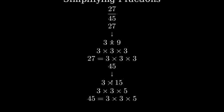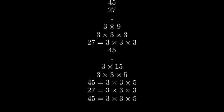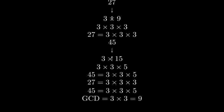we can find the greatest common divisor. Looking at both numbers, we can see that they share two 3's in common. So, the greatest common divisor is 3 times 3, which equals 9.